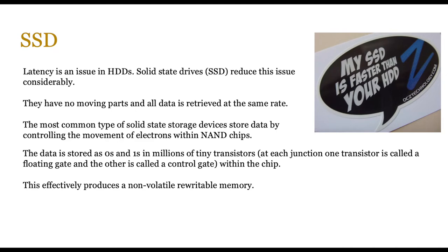The most common type of SSDs store data by controlling the movement of electrons within NAND chips. The data is stored in zeros and ones in millions of tiny transistors, which we know from logic gates. At each junction there's a transistor called a floating gate, and the other is called a control gate within the chip — both are used to ensure that data is stored within that particular transistor. This effectively produces a non-volatile rewritable memory, kind of like EEPROM. The holy grail is to create an SSD which will operate at the same speed and offer huge amounts of storage capacity.